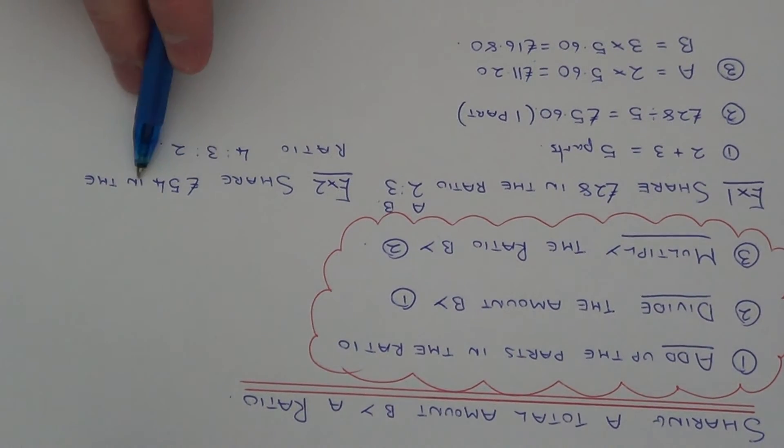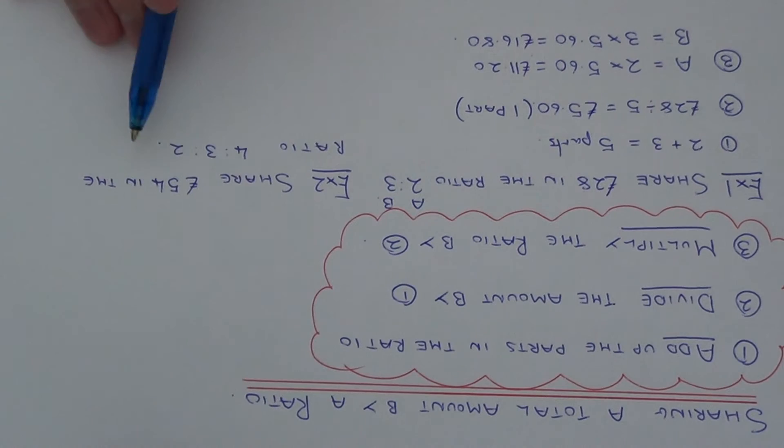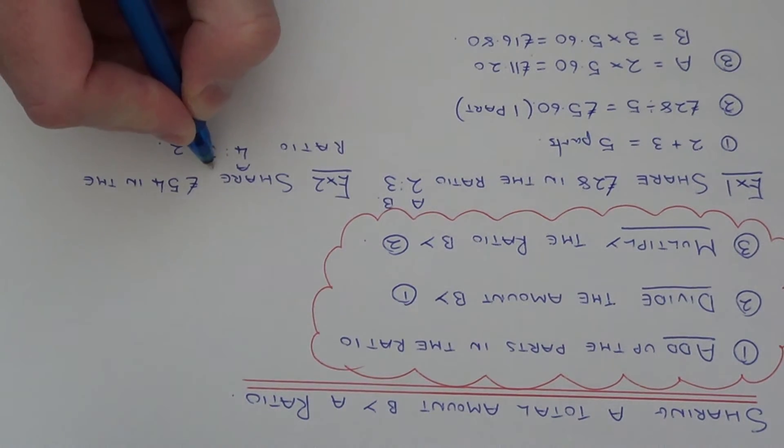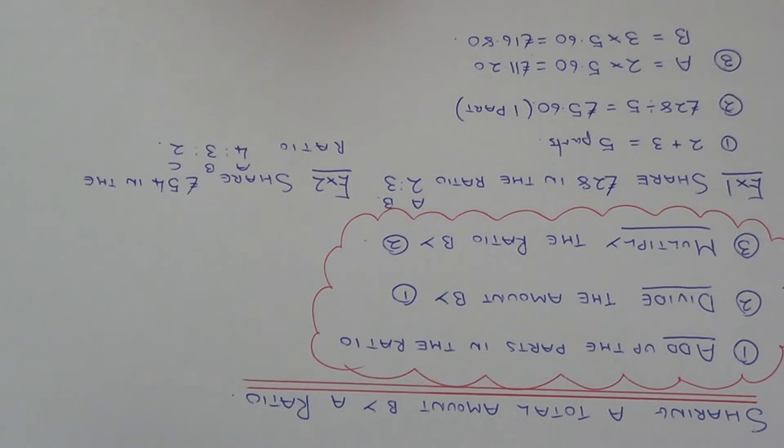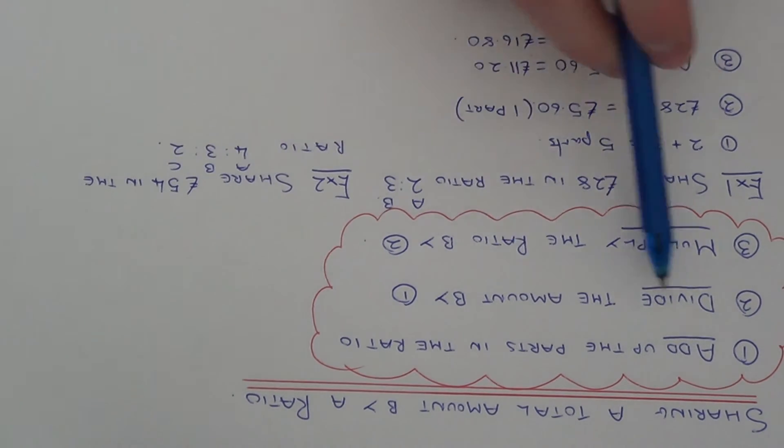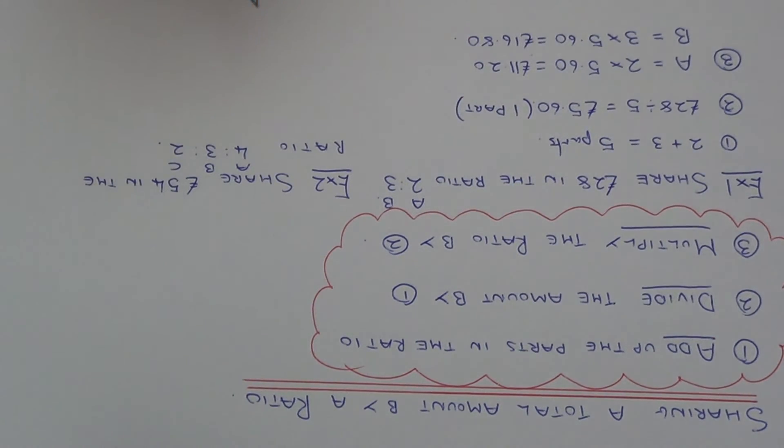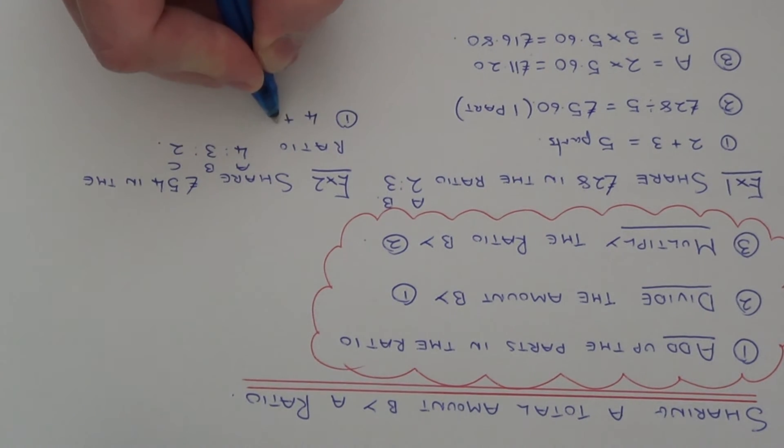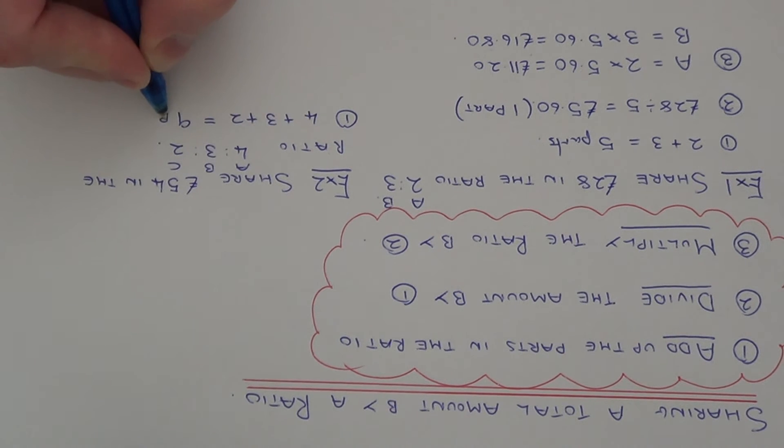So this time we need to share £54 between three people in the ratio of four to three to two. So let's call those person A, person B and person C. So this time we have three people but again the steps are still exactly the same. So step one, add up the parts in the ratio. So we've got nine parts all together.